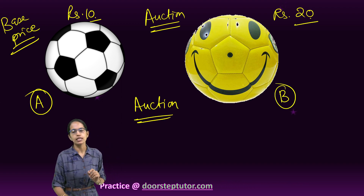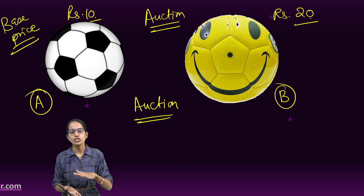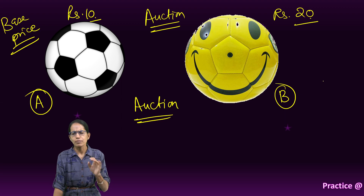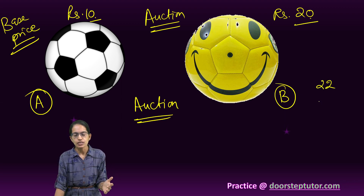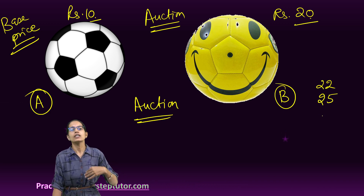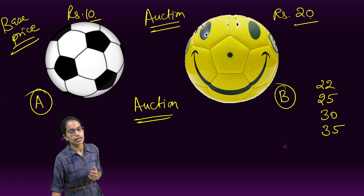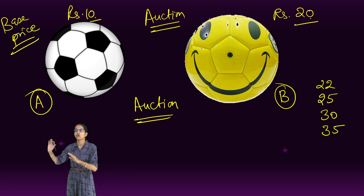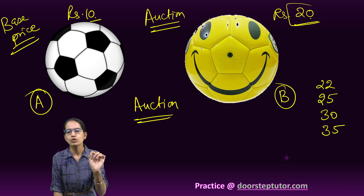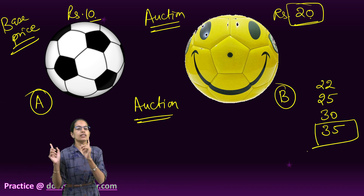However, I have another ball B — a unique ball with a smiley. I put this ball at an auction base price of 20. Person 1 says this looks beautiful, I am ready to give rupees 22. The next person says I am ready to pay 25. The third person says 30, the fourth person says 35. Now 35 becomes a cap — no other person is willing to pay more than 35.